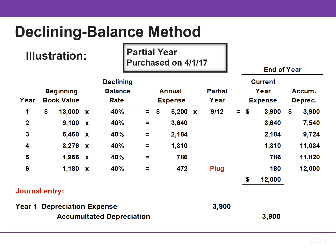Just like with straight-line, when an asset is purchased during the year, it is necessary to prorate the depreciation in the first year. If this company purchased the asset on April 1st, depreciation expense in the first year would be $3,900. That is calculated by taking the annual expense of $5,200 and multiplying by 9/12. The book value for calculating depreciation in the next year becomes $9,100, found by taking the cost of $13,000 and subtracting accumulated depreciation of $3,900.